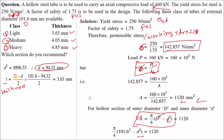Thickness of the tube equals t = (D − d) / 2, or equivalently (R − r). From this we get the required minimum thickness of 3.63 mm. Looking at the available tube options, the lightweight section has a thickness of 3.65 mm, which is just above the required value. All three can technically be used, but as a design engineer you should select the lightweight section — the most economical choice.